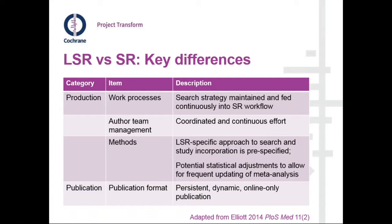In terms of the key differences between a living systematic review and a standard systematic review, we can think about four main areas around how the review is produced and published. With a living systematic review, the work processes are different: instead of searches rerun every few years, we maintain searches run often as auto-alerts, feeding into a continuous loop of screening, data extraction, risk of bias, data synthesis, and incorporation into the review.